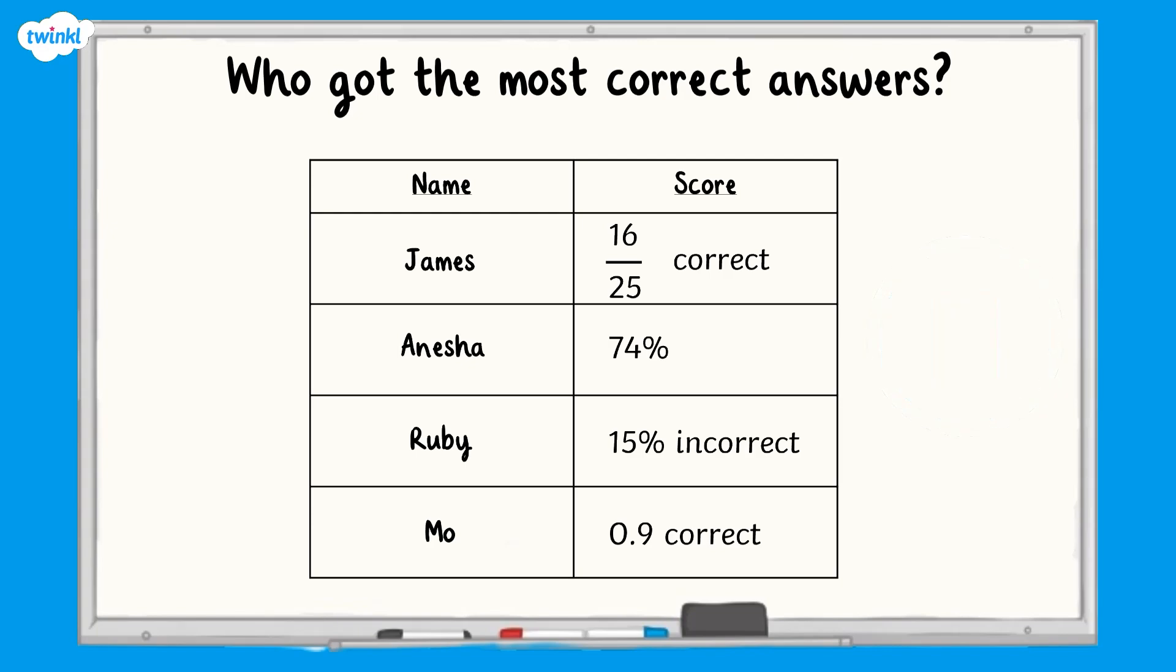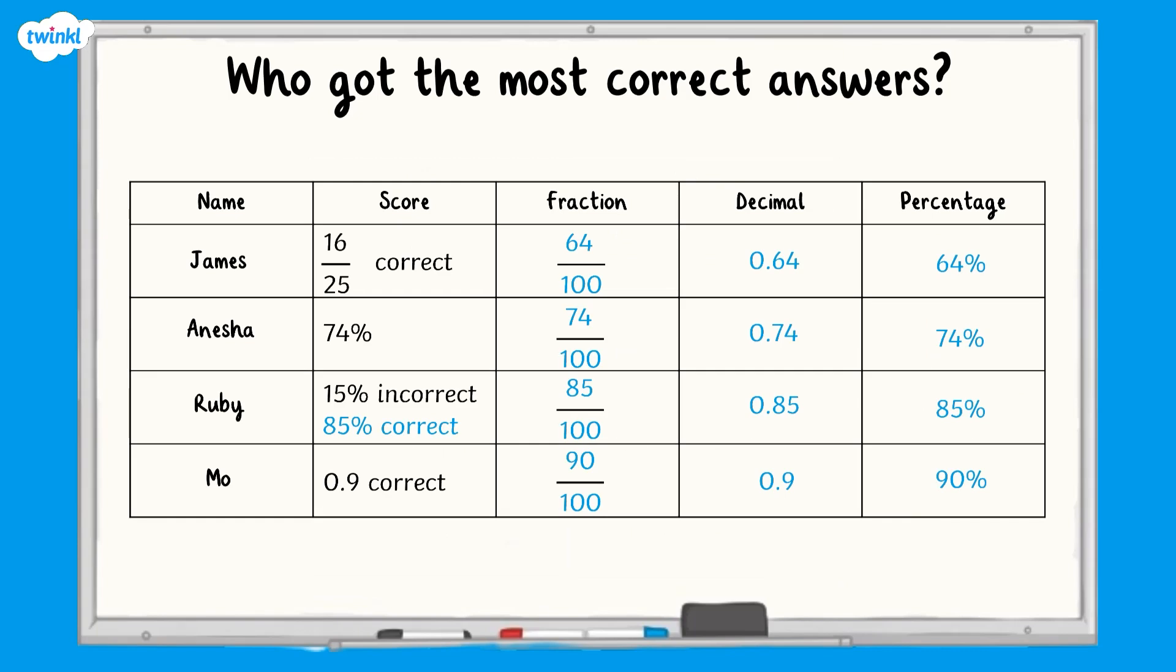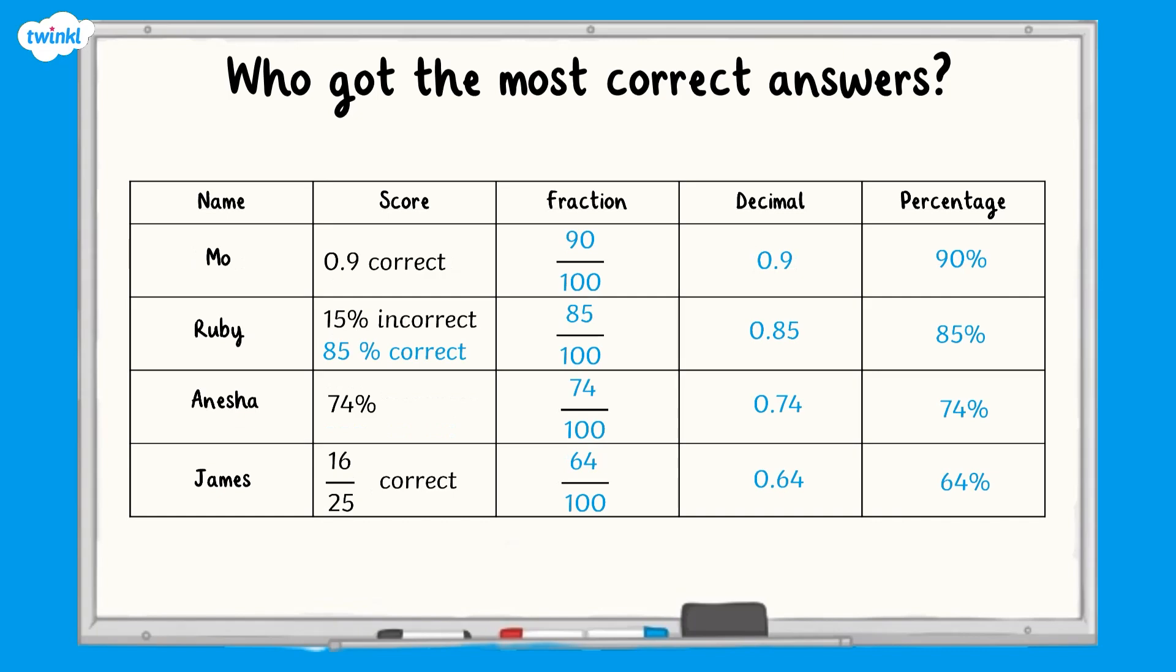All finished? Here are how many each child got correct as a fraction, decimal and percentage. This means that Mo got the most correct, followed by Ruby, then it was Anisha and finally James. Well done if you got that one correct.